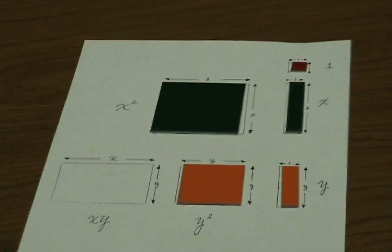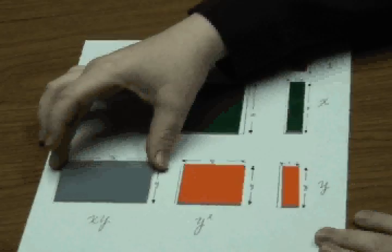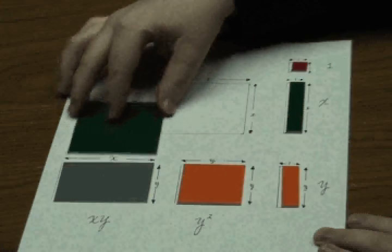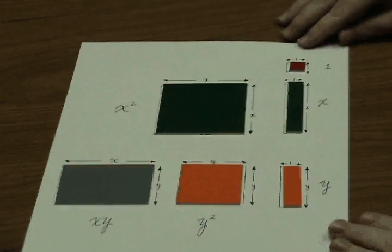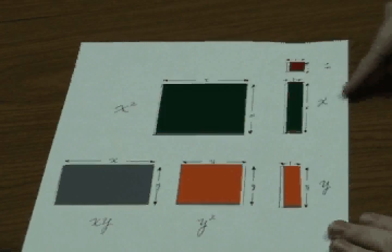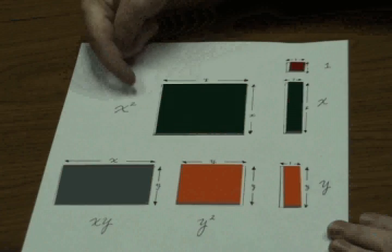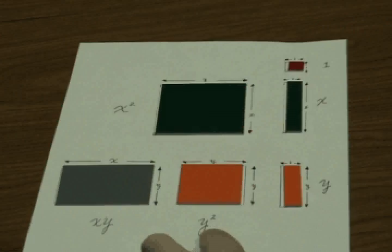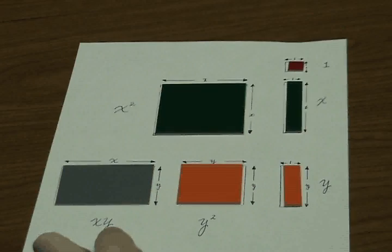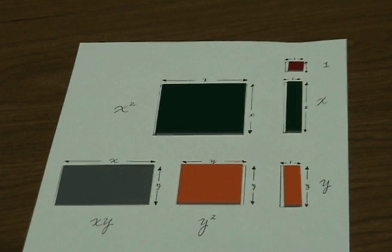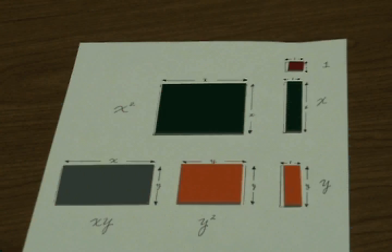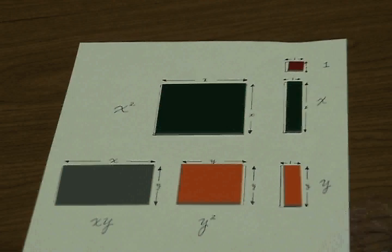Finally, we have a tile representing xy. Let's review: 1, x, x squared, y, y squared, and xy. You can extend this activity by introducing concepts such as area or multiplication of polynomials.